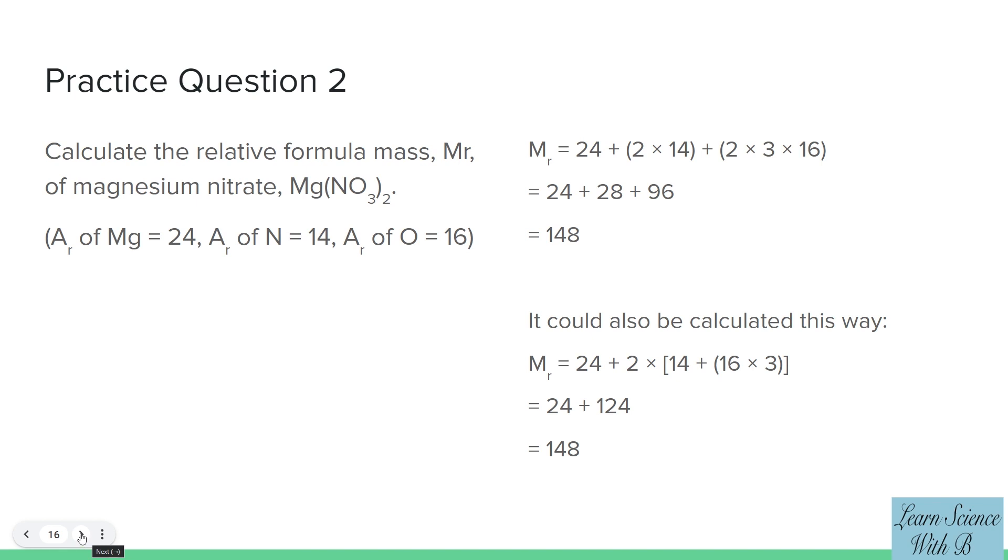It could also be calculated this way: MR equals 24 plus 2 times (14 plus 16 times 3). Equals 24 plus 124. Equals 148.